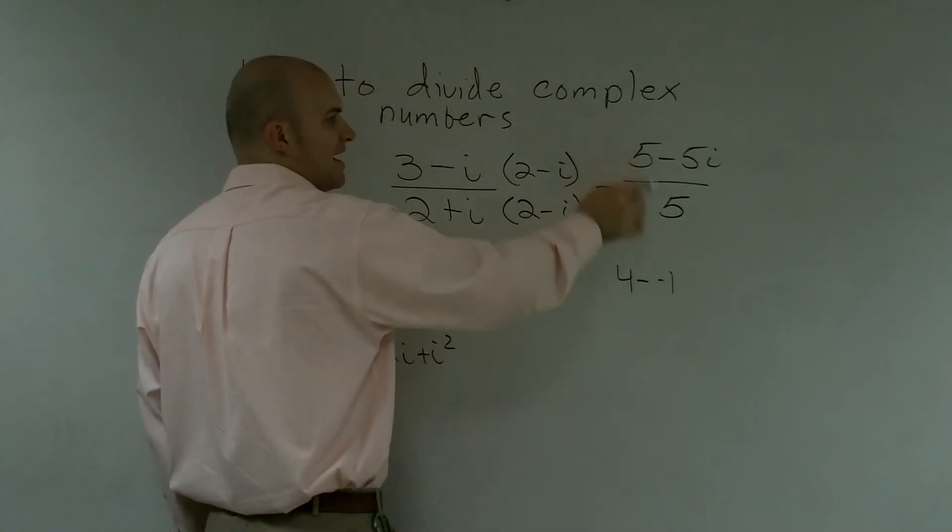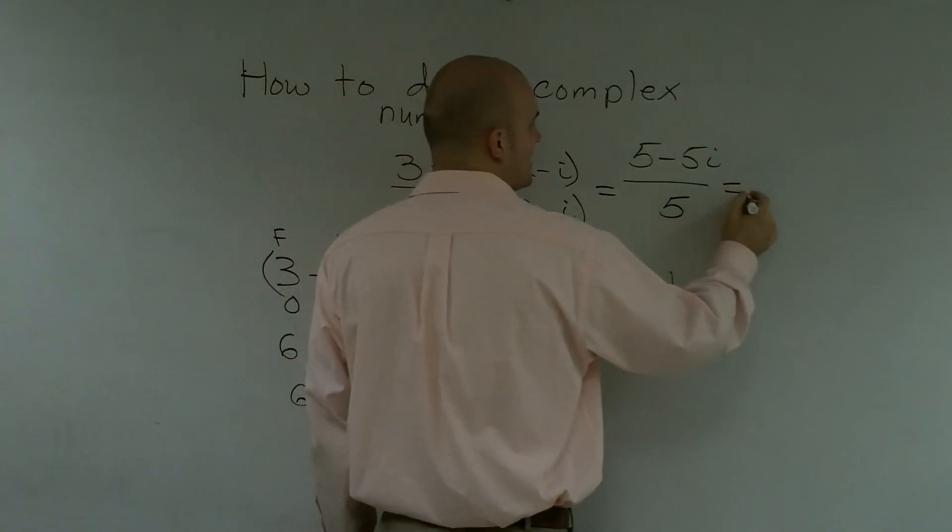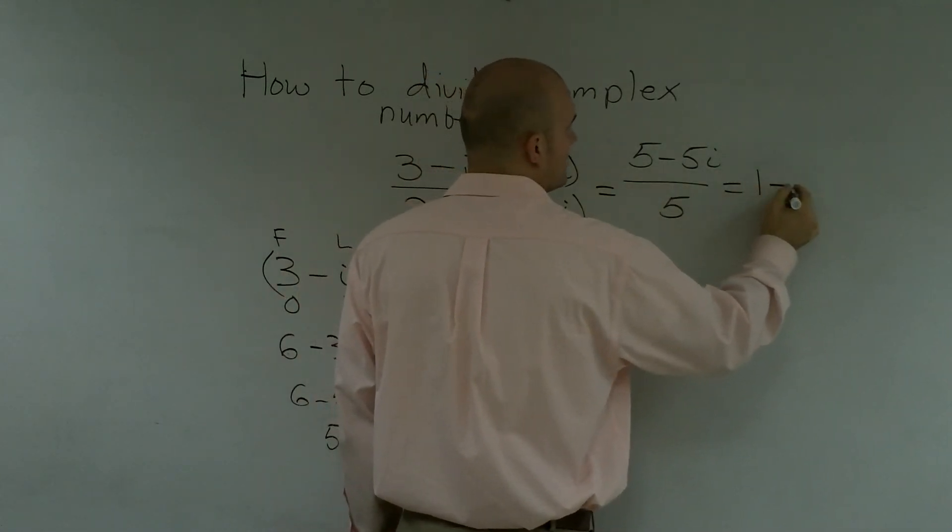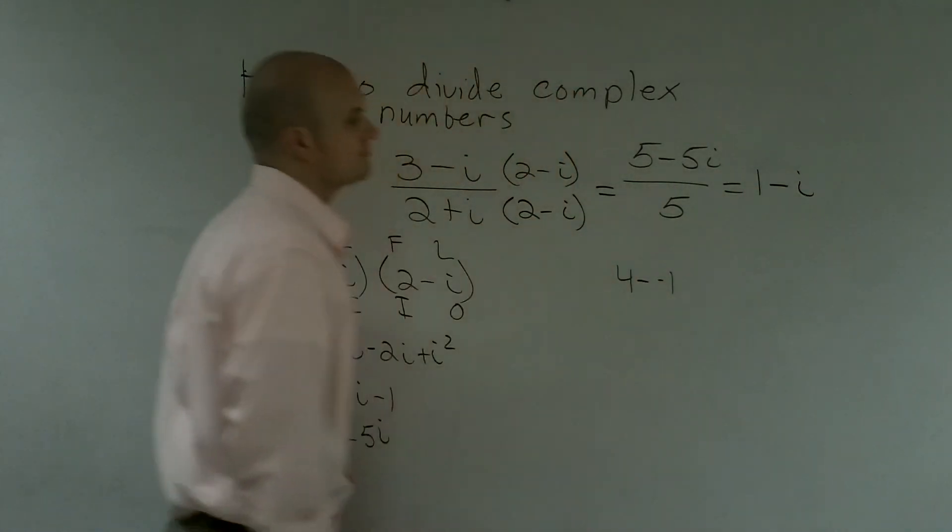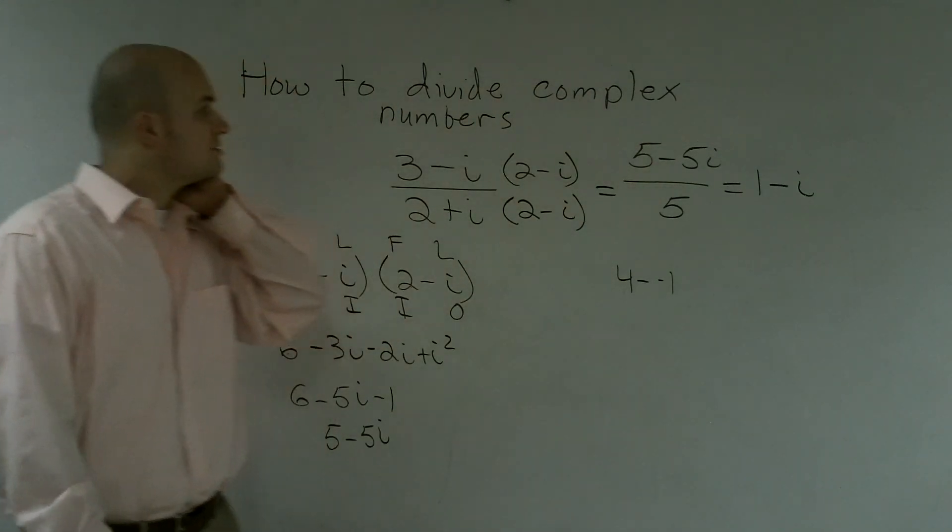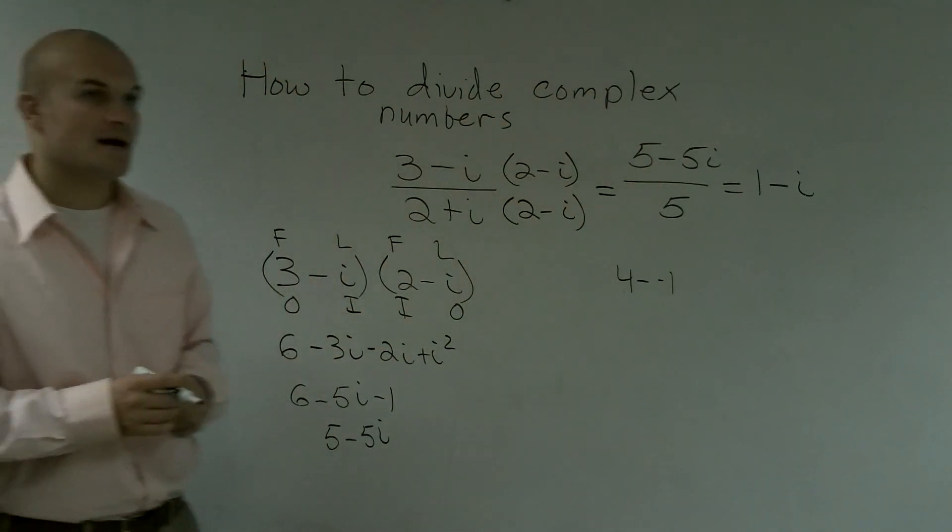Now I can divide my 5 into both of these to simplify. So I'll get 1 minus 5i because I can divide everything by 5 on this problem. So that's how you divide complex numbers.